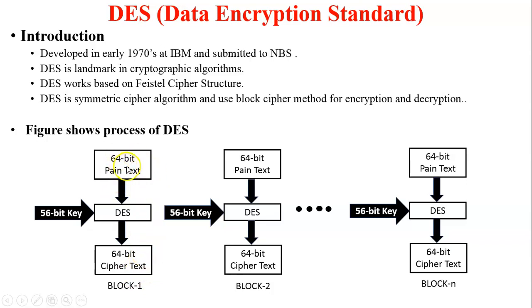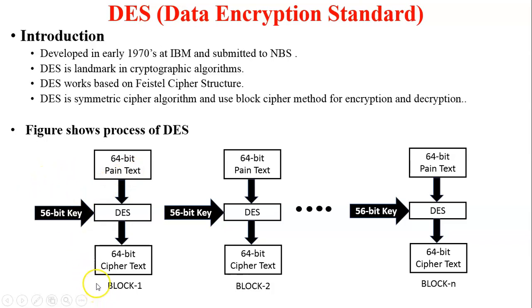This is 64-bit plain text and 64-bit cipher text. But the key size is different — plain text and key size are different. So the question is how can it work with 64-bit plain text and a 56-bit key — we will discuss this later. The encryption process is performed for block one, then block two, and up to block n.